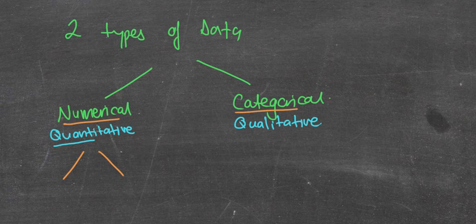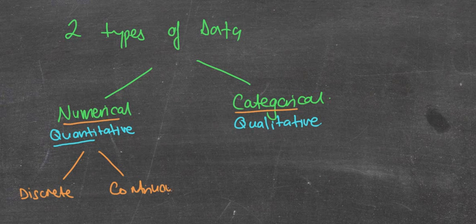Numerical splits into two different types. There are two types of data: numerical and categorical. Numerical splits into two types: it splits into discrete data and splits into continuous data. Discrete data is where it has to be an exact number.